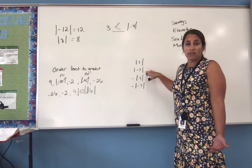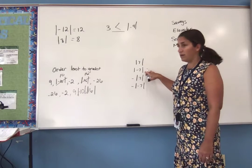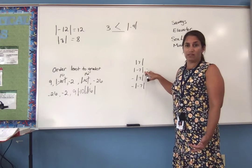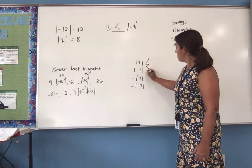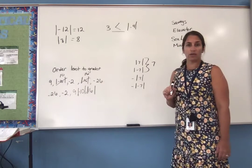Those are the same distance from 0. 7 and negative 7 are both 7 spaces from 0. So both of these are equal to 7.